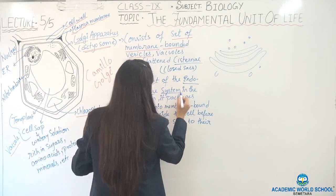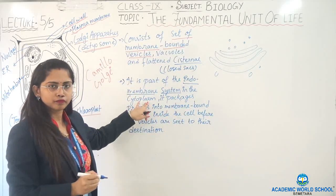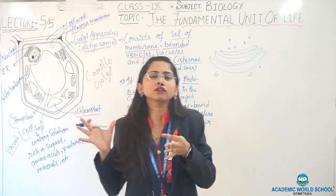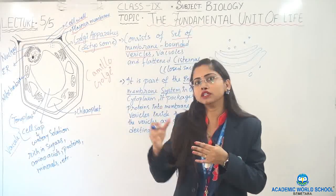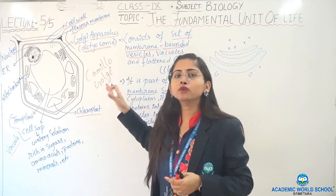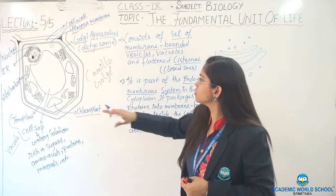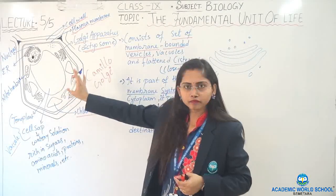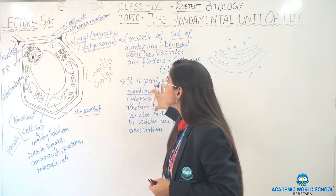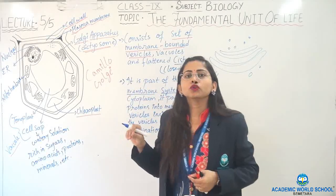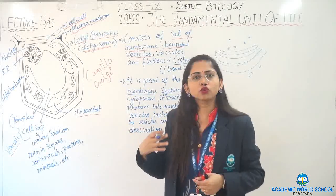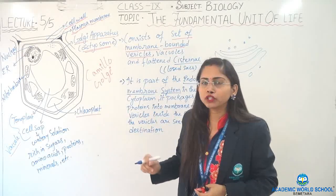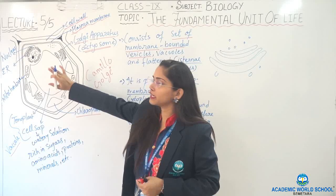The Golgi apparatus is part of the endomembrane system in the cytoplasm. It is closely attached somewhat to the endoplasmic reticulum and is present near it in the cytoplasm. The major function of the Golgi apparatus is to do the packaging, storage, and modification of the substances which are produced in the endoplasmic reticulum, which is near to the nucleus.